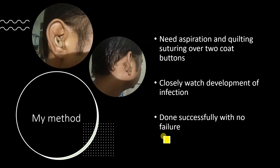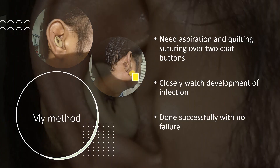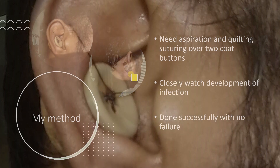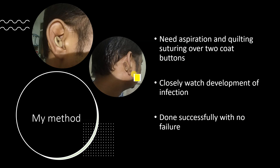Based on my own surgical experience, where I dealt with a patient who developed perichondritis, I discussed with my colleagues and developed my own method. I used two coat buttons — after aspiration, I stitched the coat buttons back to back in a quilting manner and observed for seven to ten days. I kept the patient under antibiotic cover and called them to the clinic daily to check for tenderness or infection. I did five cases and all were successful — no incision, just a bit of precaution, and all swellings resolved with no recurrence.